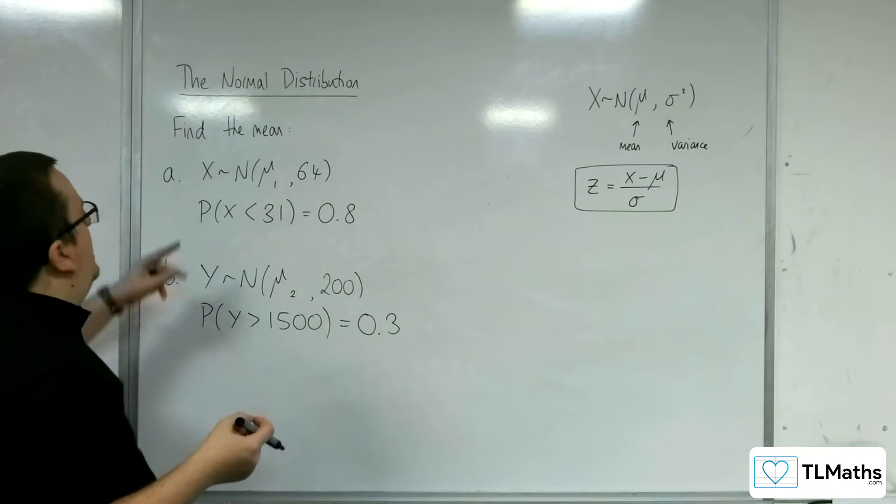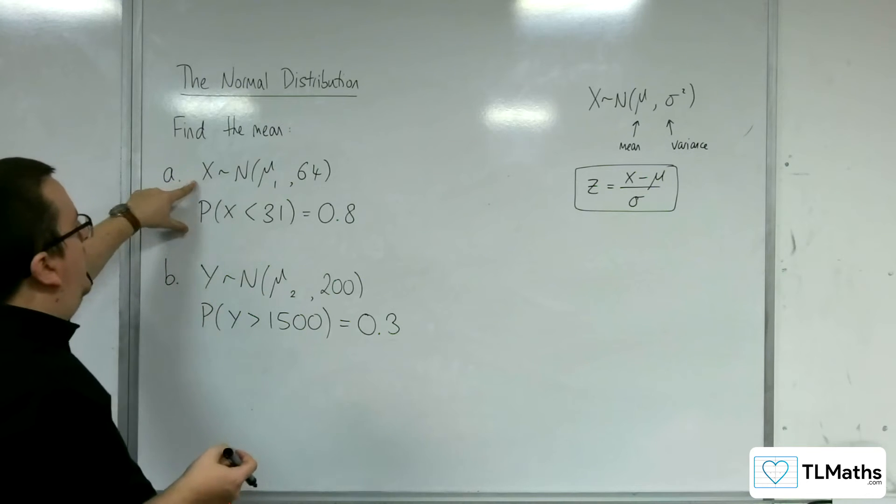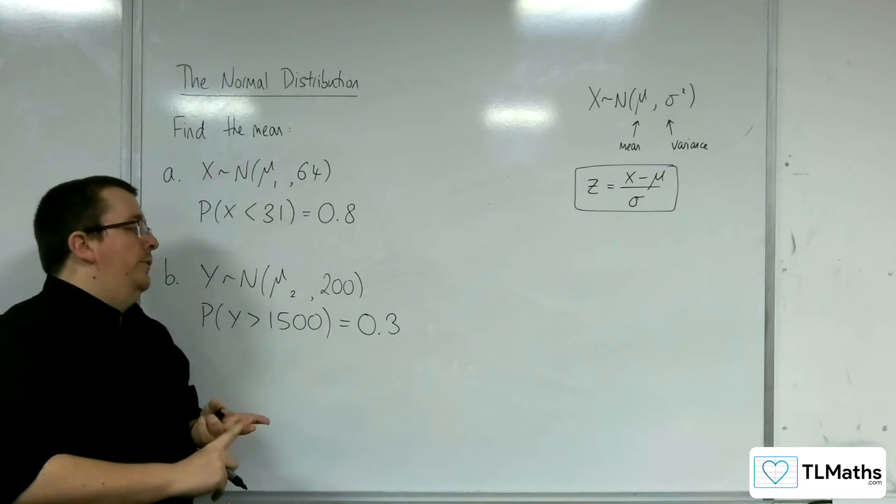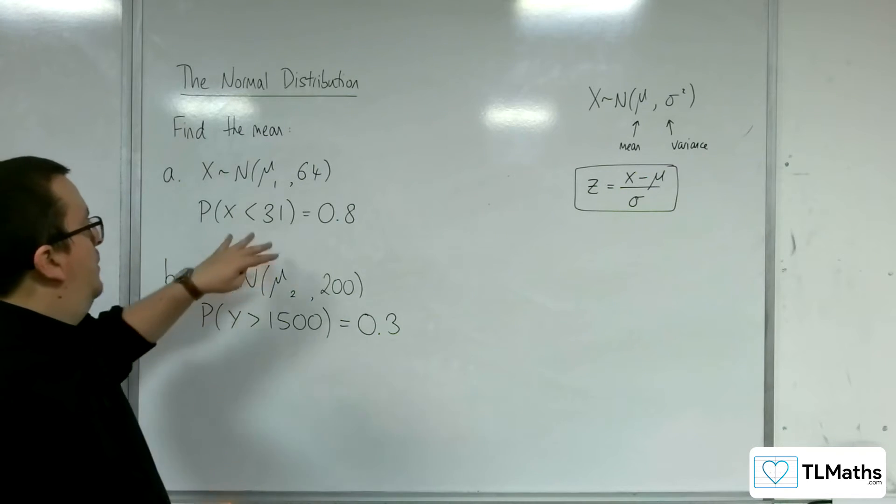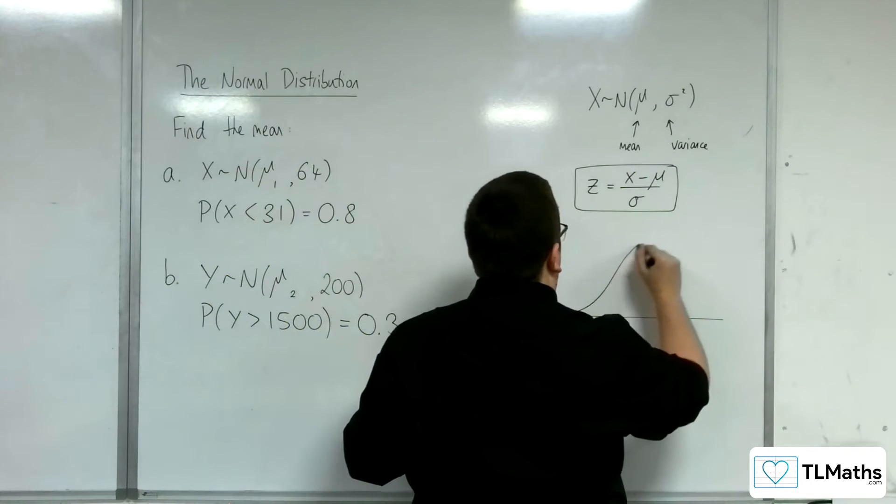We're going to have a look at part A here. What we've got in both of these situations is we don't know the mean, but we know the variance, and we've been given a bit of extra information. So with this first one, let's draw a diagram so we can see what's going on.